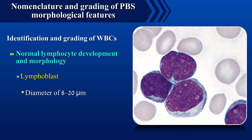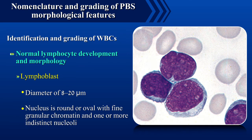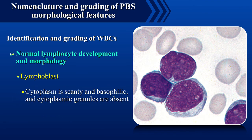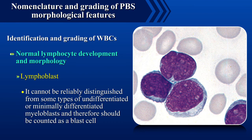Now coming to normal lymphocyte development and morphology. Lymphoblast has a diameter of 8 to 20 microns. The nucleus is round or oval with fine granular chromatin and one or more indistinct nucleoli. The cytoplasm is scanty and basophilic, and cytoplasmic granules are absent. It cannot be reliably distinguished from some types of undifferentiated or minimally differentiated myeloblasts and therefore should be counted as a blast cell.